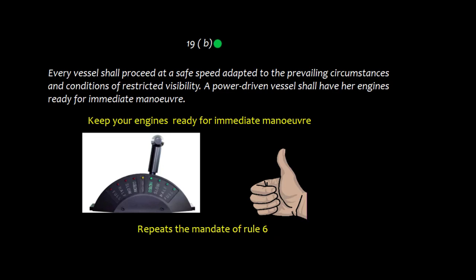Rule 19b states every vessel shall proceed at a safe speed adapted to the prevailing circumstances and conditions of restricted visibility. A powered vessel shall have her engines ready for immediate maneuver — so inform the engine room and keep your engines ready. Rule 19b is essentially a repetition of the requirements given in rule 6.